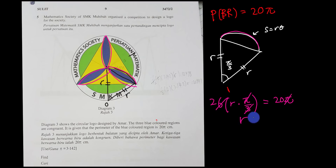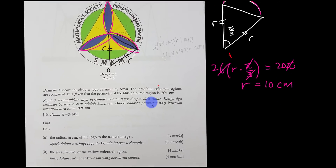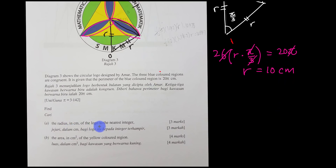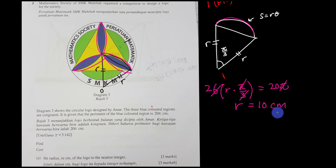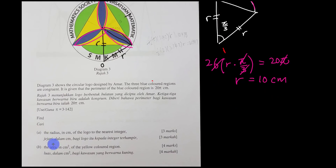Solving the equation: the π cancels on both sides, leaving 2r = 20, so r = 10 cm. The first part of the question asks us to find the radius in cm to the nearest integer, and the answer is 10.